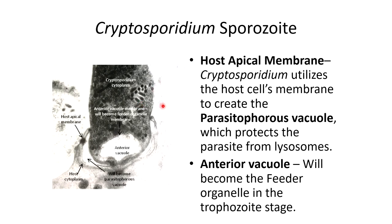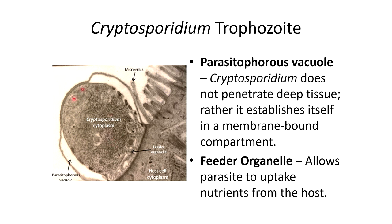Here's a more detailed image of the sporozoite. Cryptosporidium actually utilizes the cell membrane of the host epithelial cell itself in order to create its parasitophorous vacuole, which it uses to protect itself from lysosomes. The anterior vacuole is what will later become the feeder organelle, which it uses to take nutrients from the host epithelial cell. The trophozoite does not penetrate or enter the epithelial cell itself — instead it sits on top of it, and this vacuole acts for protection. The feeder organelle has contact with the epithelial cell, and that's what it uses to uptake nutrients from the host.